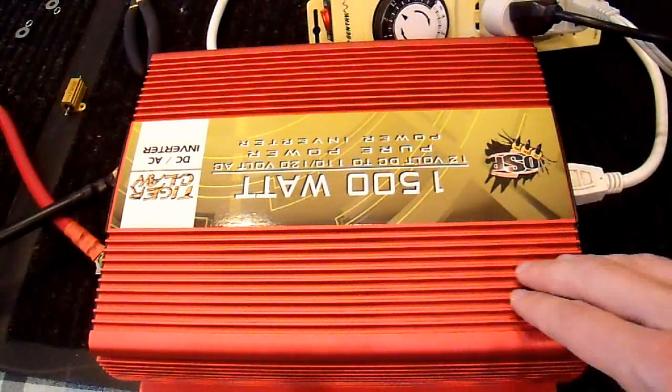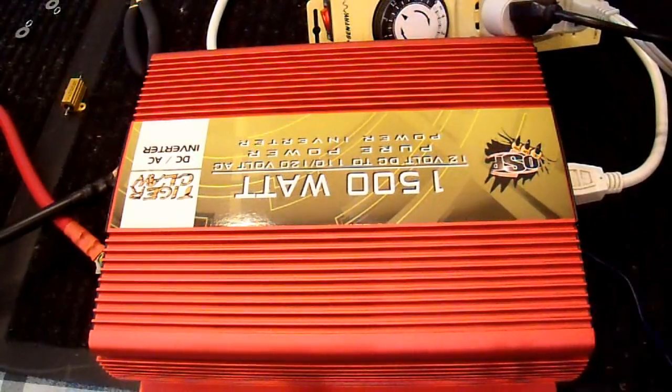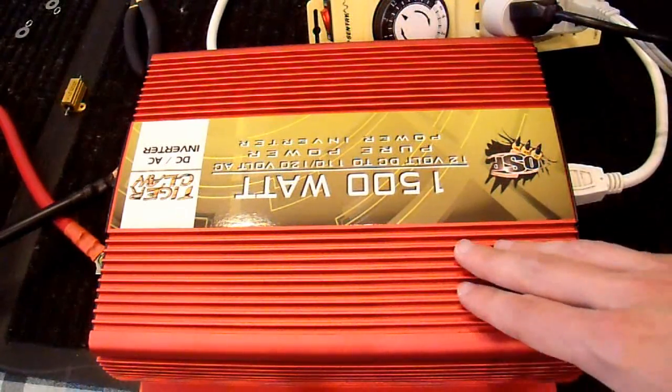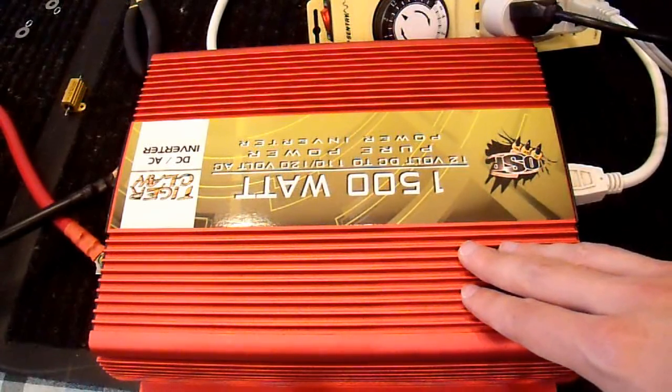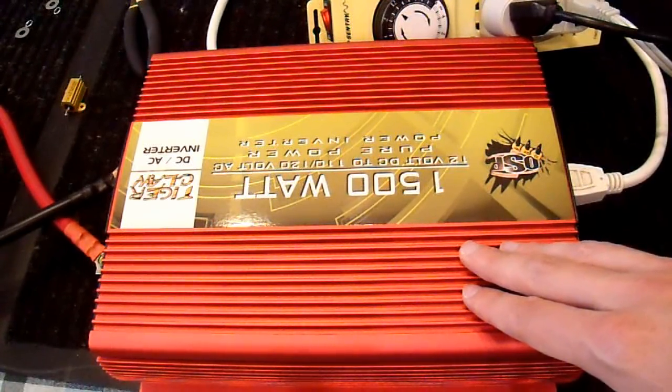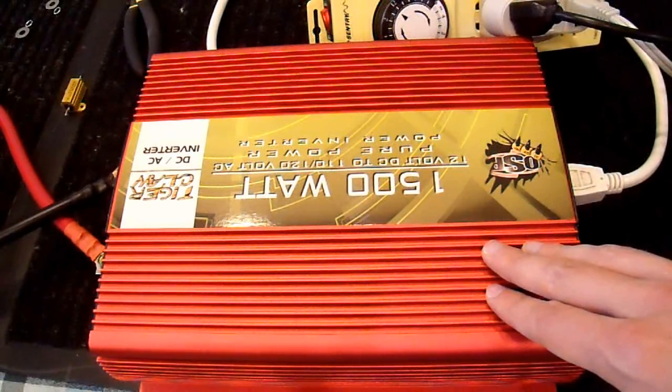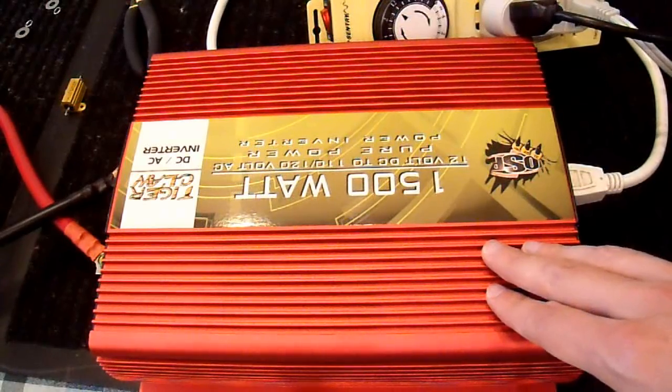And a lot of times they actually fib on the output wattage. For example, Ames Power, I found out, their 2,000 watt inverter, you can put a load that is nominal 2,000 watts at 120 volts output, and it will run it. However, the output voltage will sag down to about 100 volts, and you only get a little less than 1,500 watts out once it's fully loaded.